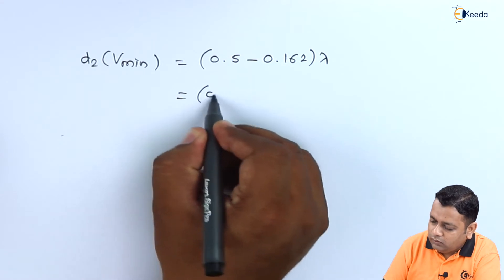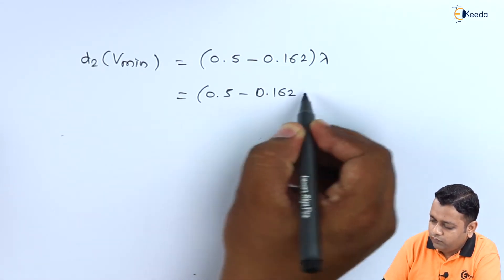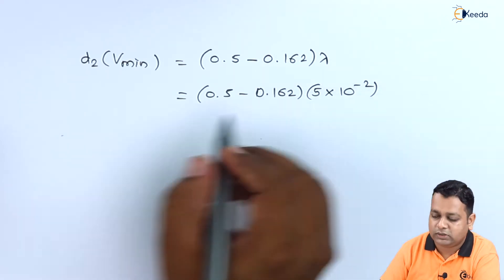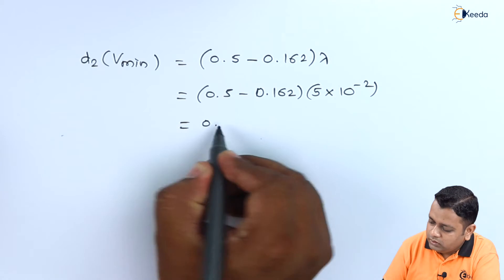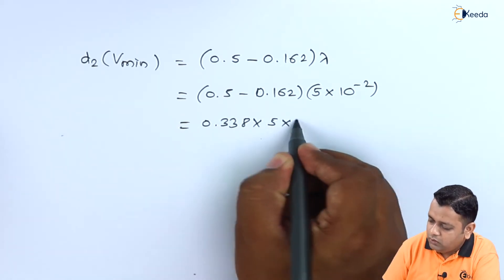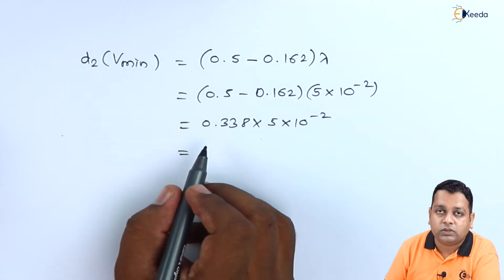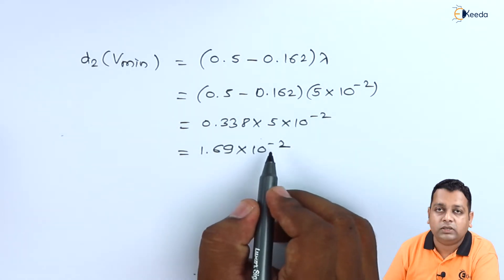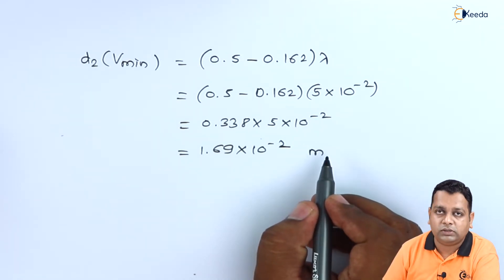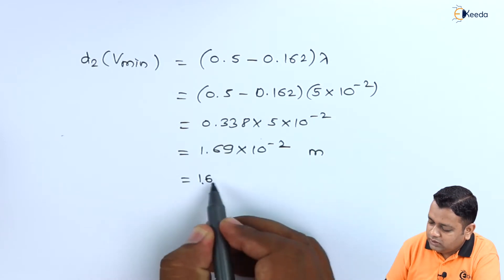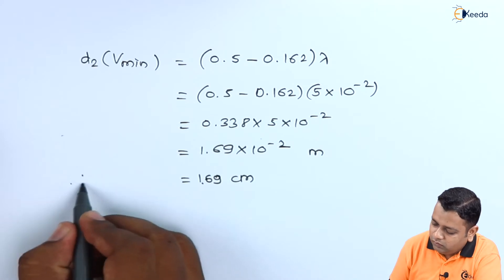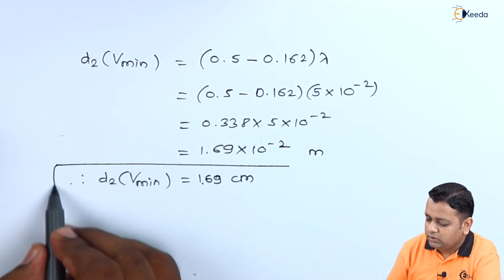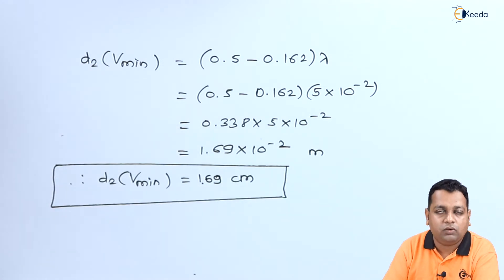The difference 0.338 times lambda, in multiplication by lambda as 5 times 10 to the power minus 2, gives 0.338 times 5 times 10 to the power minus 2. This gives the answer for the distance to the minimum as 1.69 times 10 to the power minus 2 meters, or 1.69 centimeters — D2 corresponding to Vminimum. This is the answer for the second part of the problem statement.